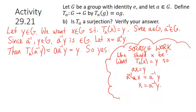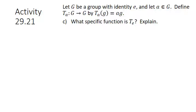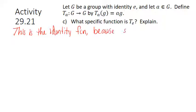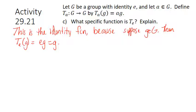Part C: what specific function is T_E? T_E multiplies everything by the identity E, so whatever you plug in doesn't change at all — this is the identity function. If little g is in G, then T_E of g equals E times g equals g. So T_E is just the identity function.